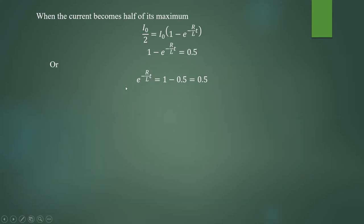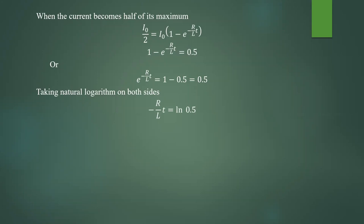Then you apply natural logarithm on both sides. You will get ln of e to the power minus R by L into T, which equals minus R by L into T, because log of e to the power X to the base e is nothing but X. So this equals ln of 0.5. Next, you have to find the value of T. R is 10 ohm, L is 50 Henry. Therefore, T is equal to minus L by R into ln of 0.5.